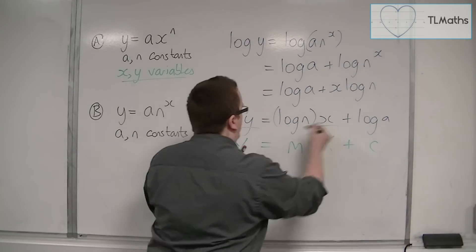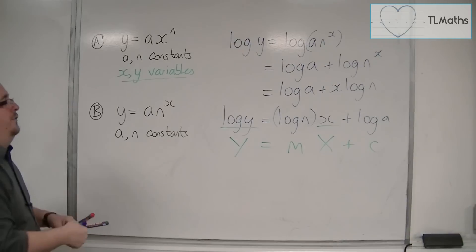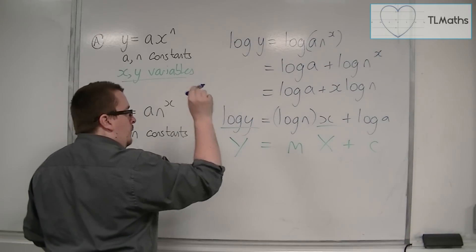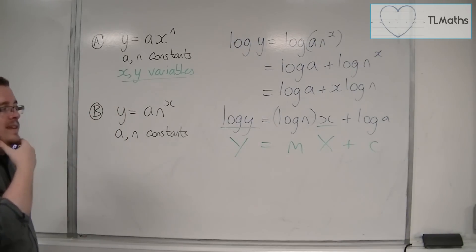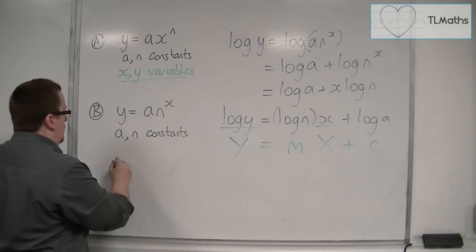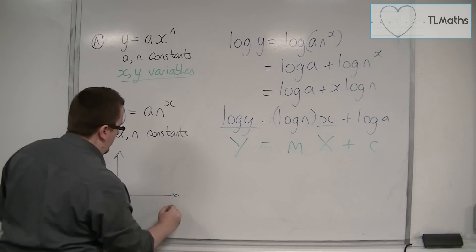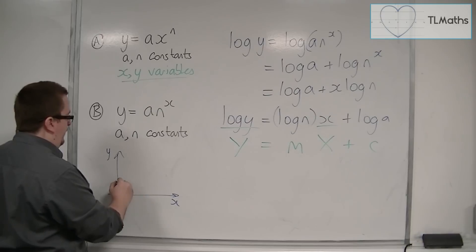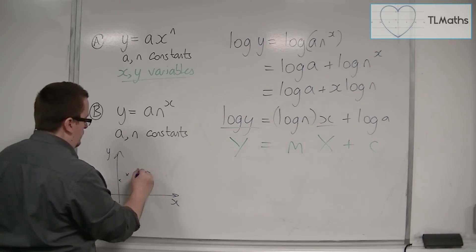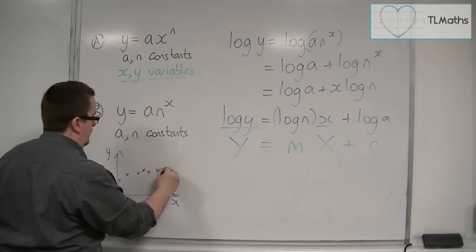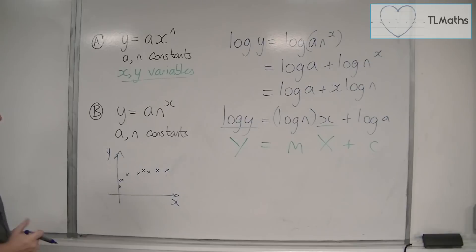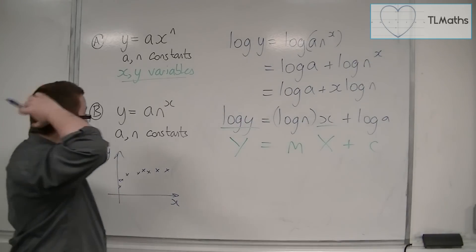So now what we have is that we've reduced it to linear form. Instead of my plotted points, maybe they look like that this time. And now, if I plot x, because that's the x that I have, against log y, these are my variables now.